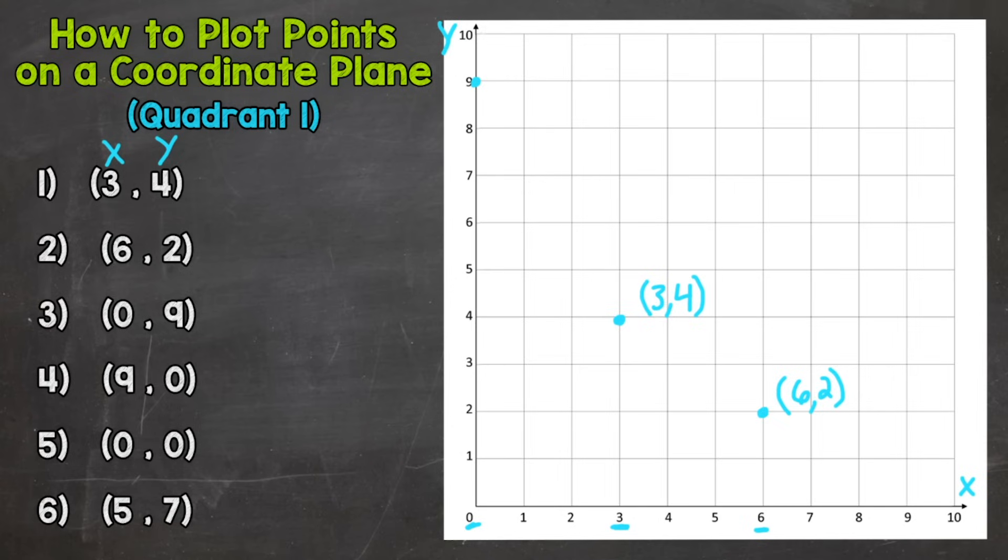Now number four is (9, 0). That is not the same as (0, 9), because here for number four our 9 is our x-coordinate. So we go over 9, over 9 and up zero. So we plot a point on our x-axis there and we can label this one. So (9, 0), and I'm going to label the last one, this one was (0, 9).